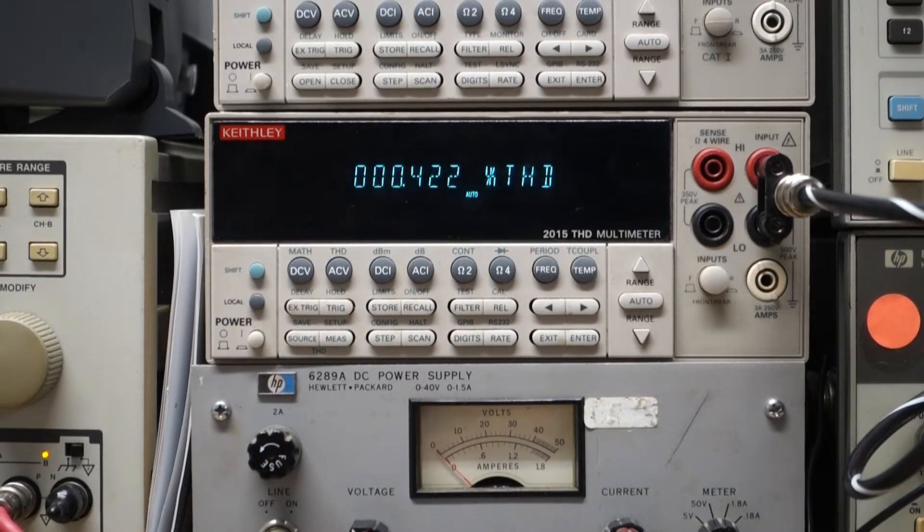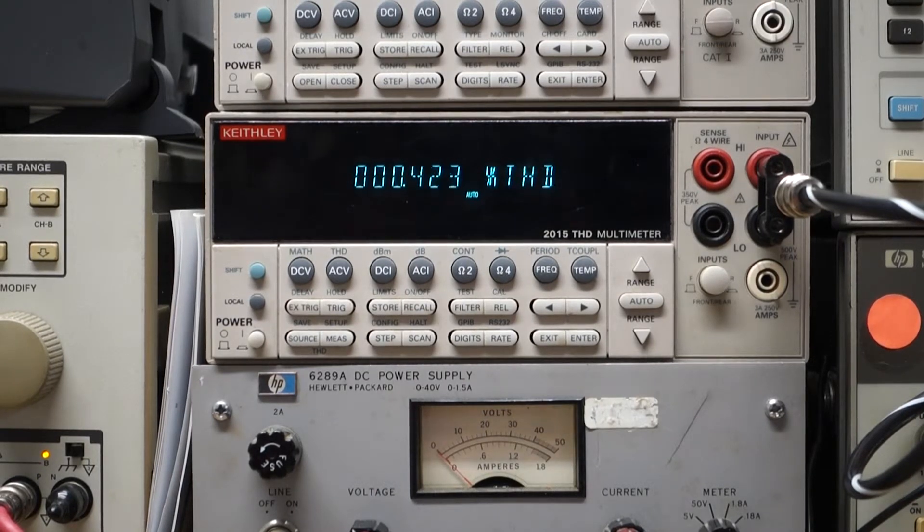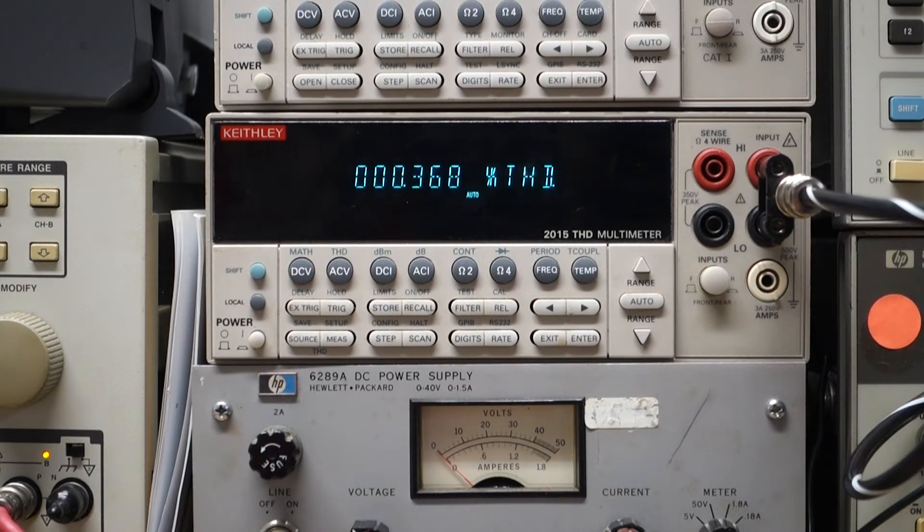This is the Keithley 2015 THD. The Achilles heel of this device is the internal sine wave generator which is showing right now between 0.3 and 0.5 percent total harmonic distortion. Specs should be better than that but suffice it to say that the signal source on this unit is not pure enough. I actually have gotten a lot better results burning a one kilohertz tone to a CD with Audacity than I get from this generator.